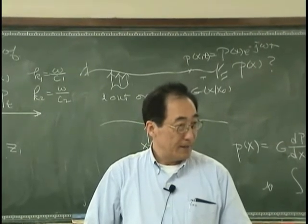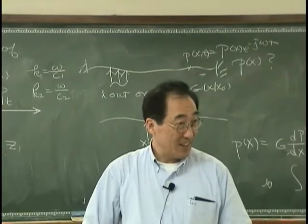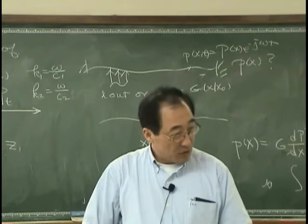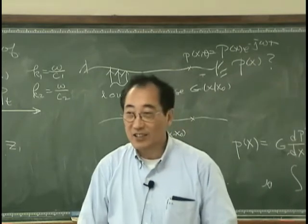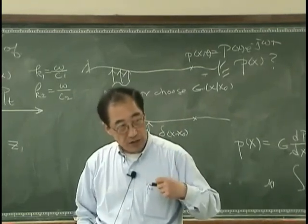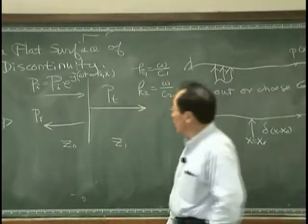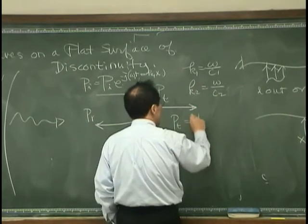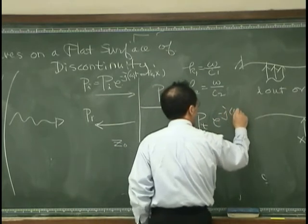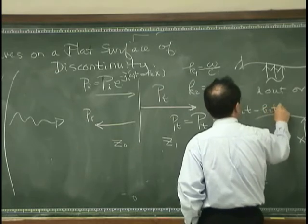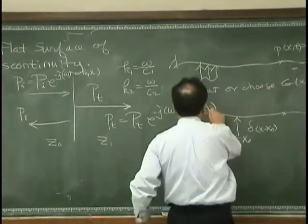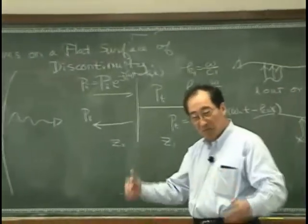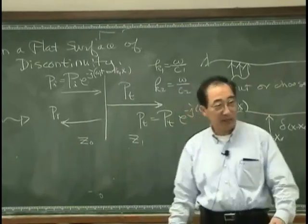A student challenges this answer. The instructor says: that is good — you are challenging my answer, that is good. Let's see. Then I will say ω₁ and ω₂ for the transmitted pressure magnitude. Are you happy with ω₁ and ω₂? Okay, so democracy is good — you always accept the idea.